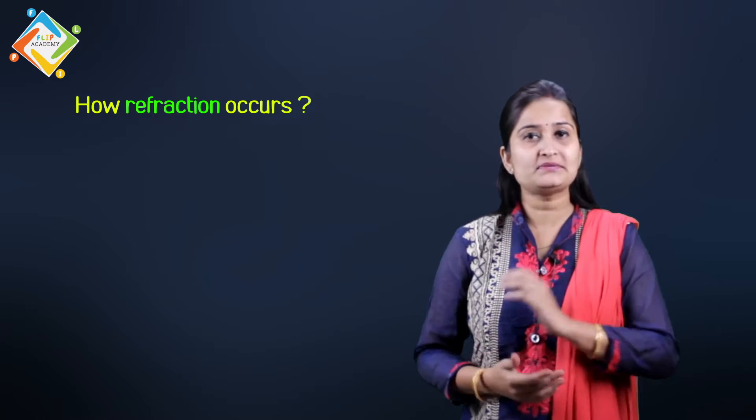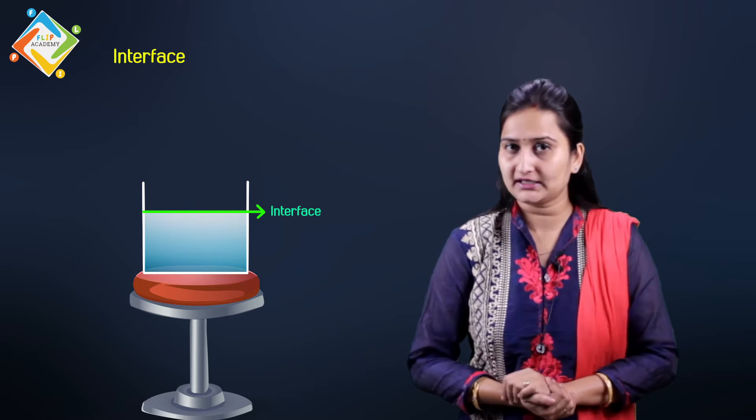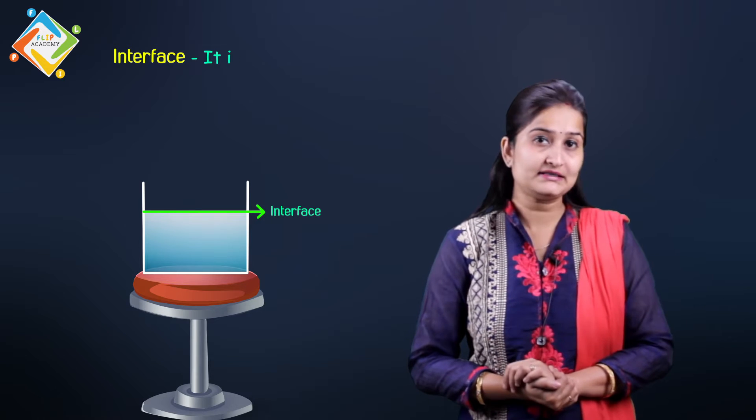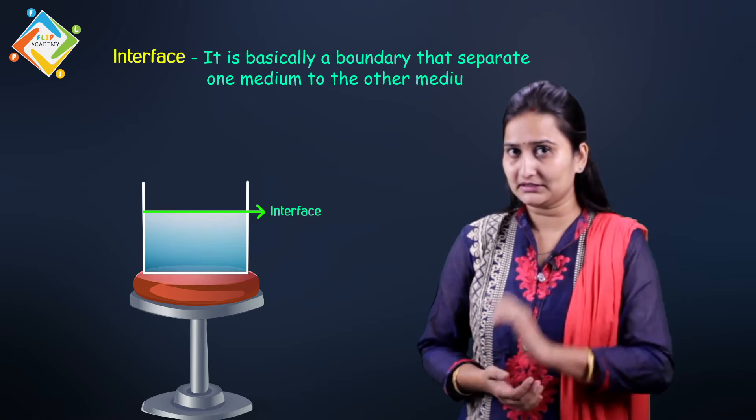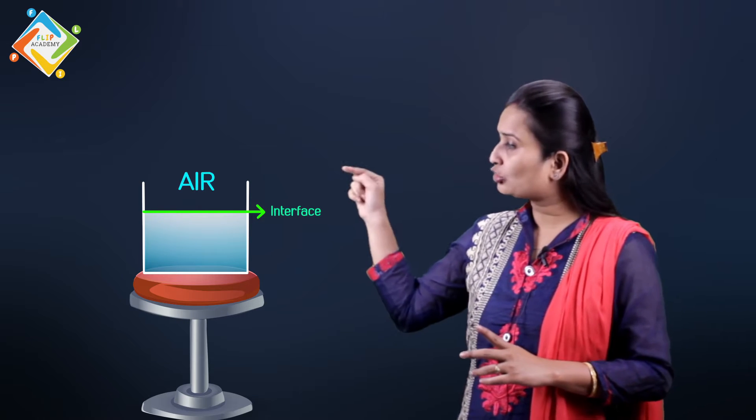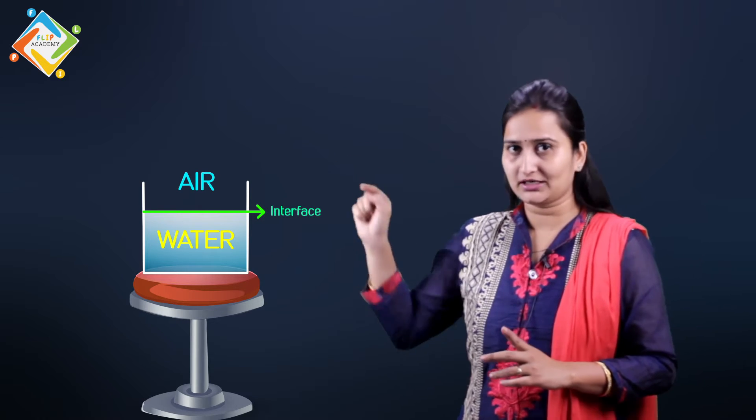So, first of all, you can understand what angle of refraction is happening. Let us take water. You have taken water here and this is the surface of the water. It acts as an interface. Interface is basically the boundary that separates one medium to another medium. Like here, the interface is the air to separate from the water.